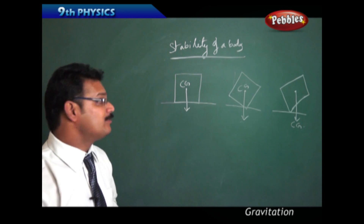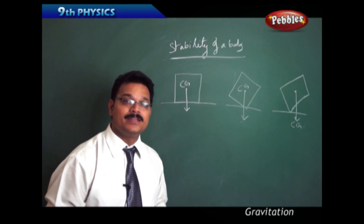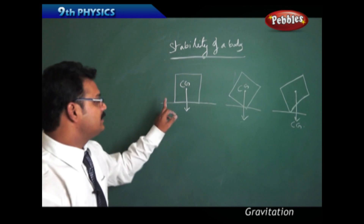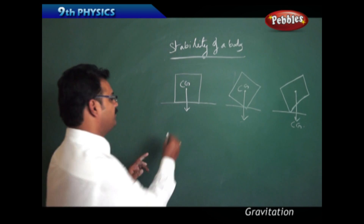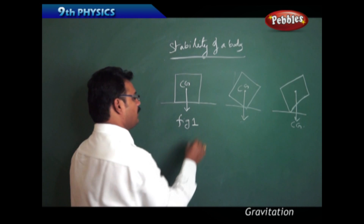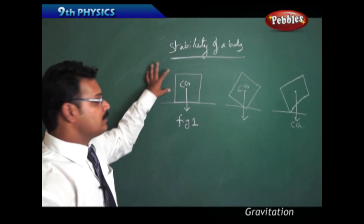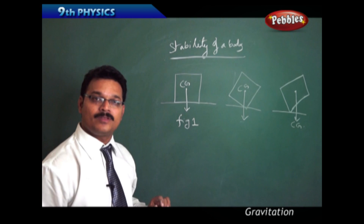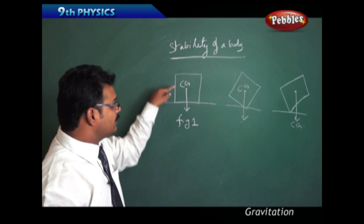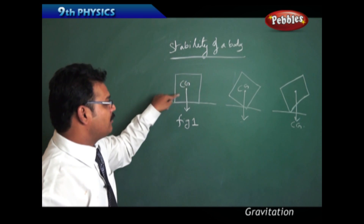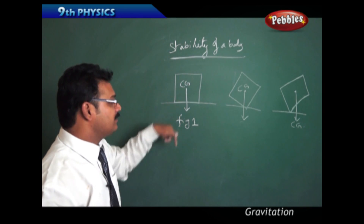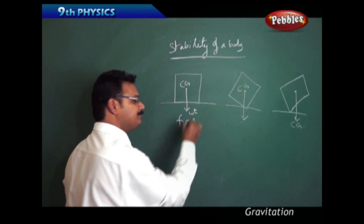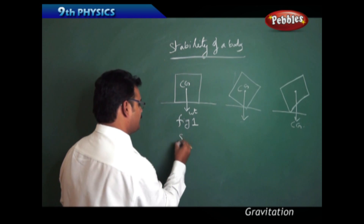We now discuss how the centre of gravity decides the stability of a body. See Figure 1: the body is stable, resting on the table. The centre of gravity is exactly at the centre of the rectangular box, and the weight is acting downward. This is a stable condition.